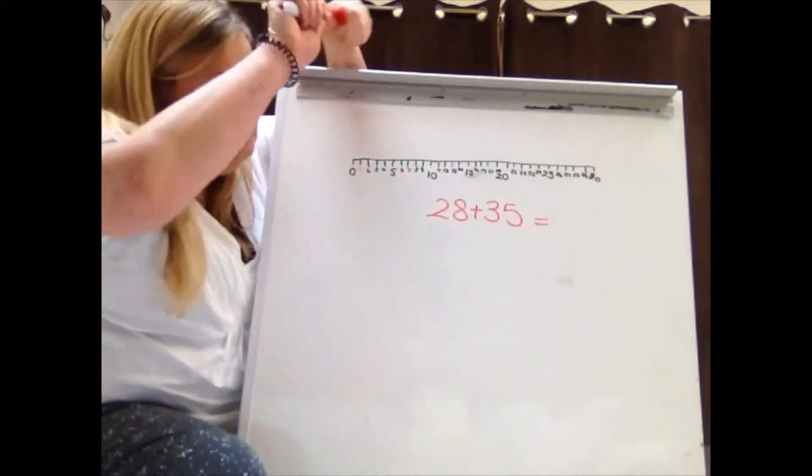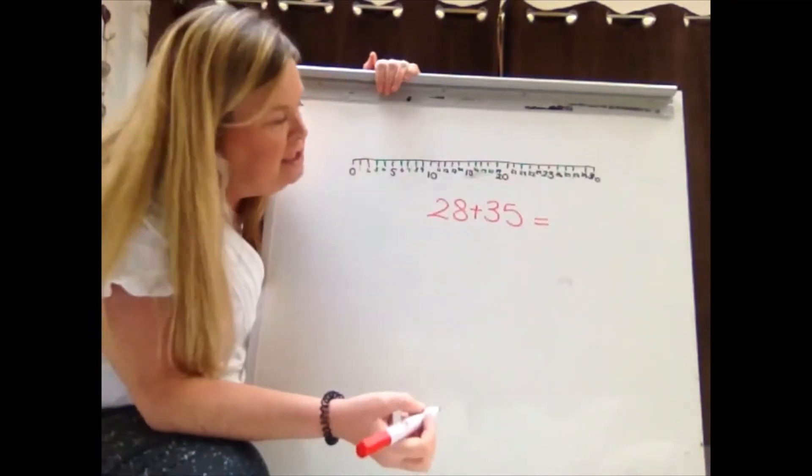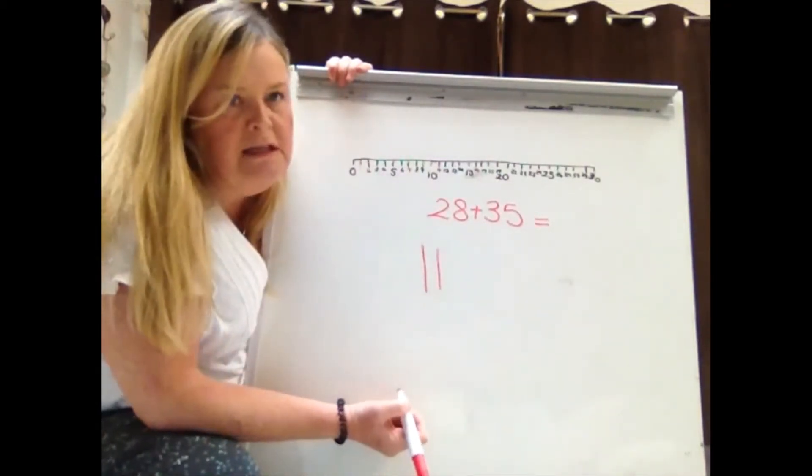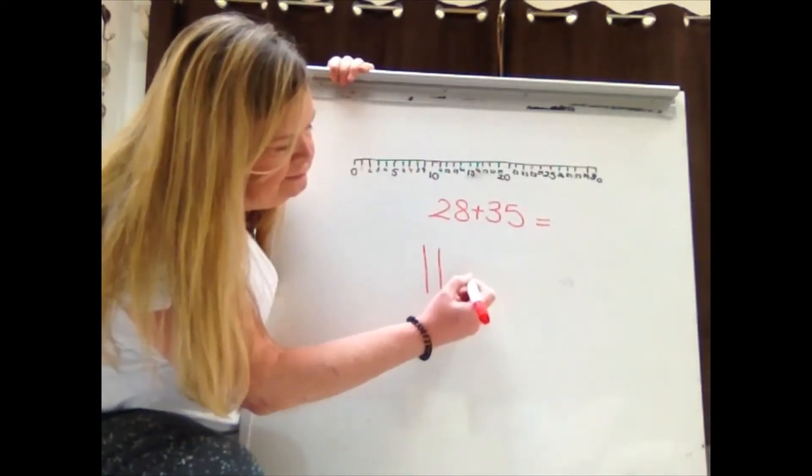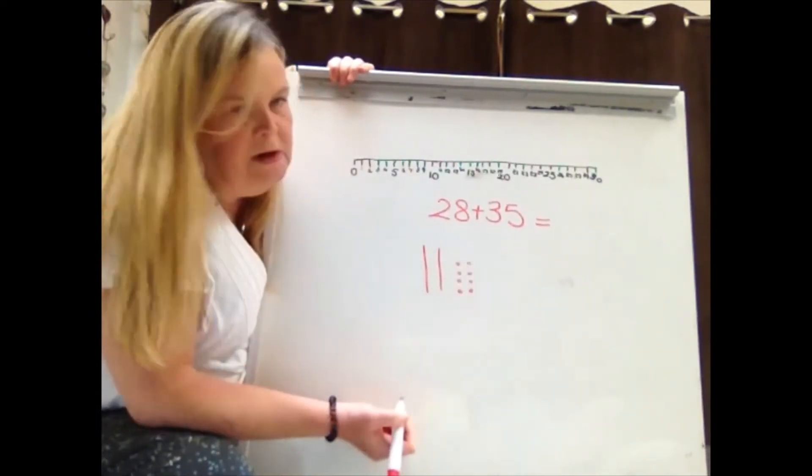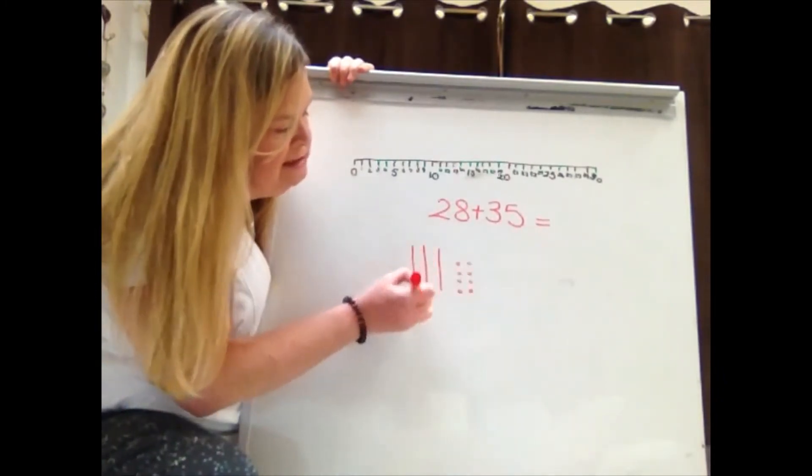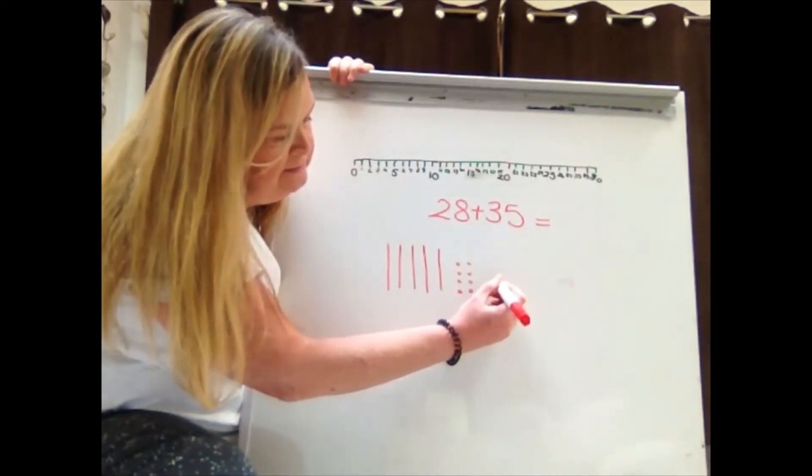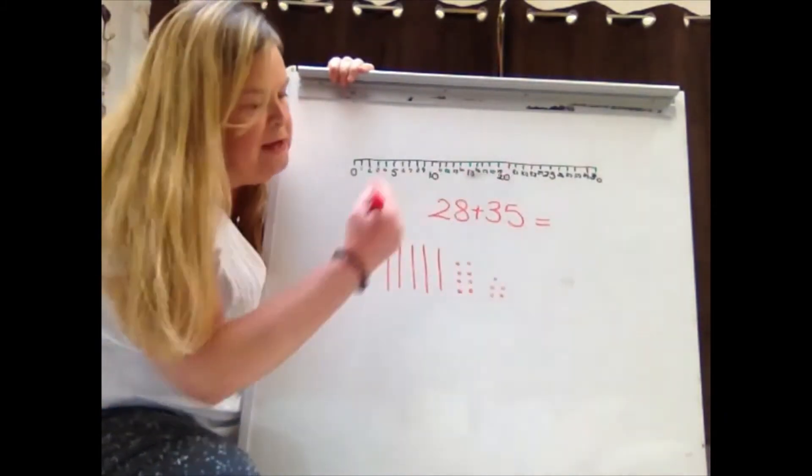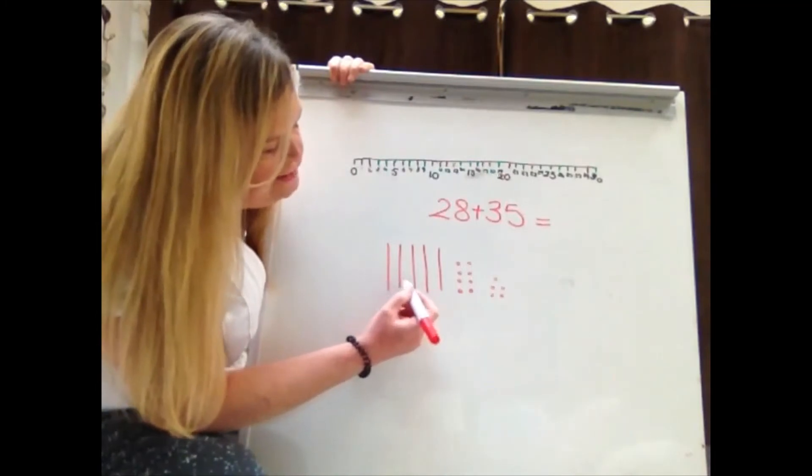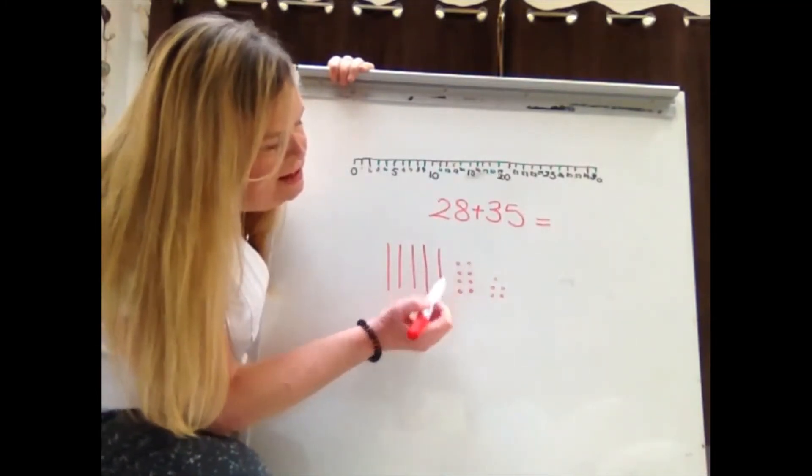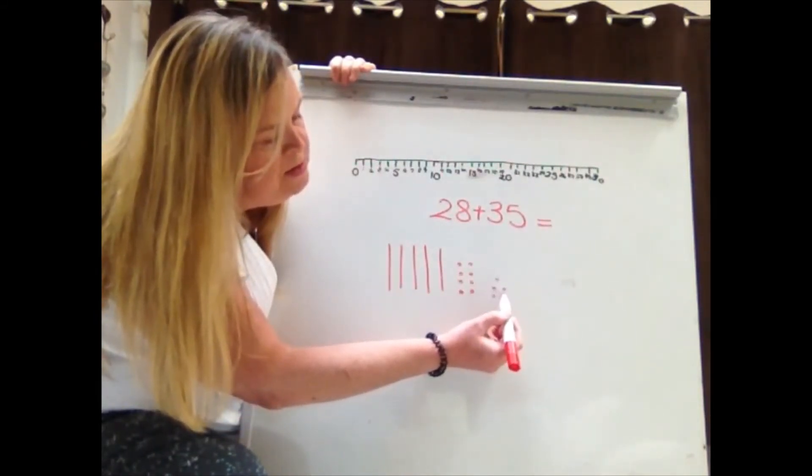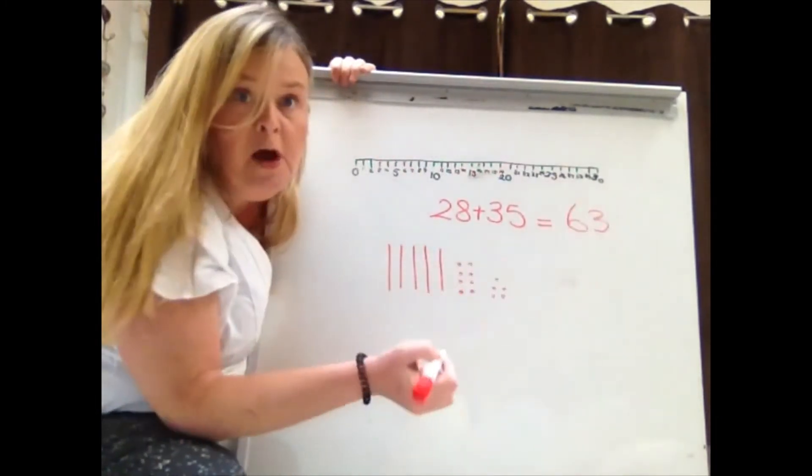So I've written a number sentence here: 28 plus 35. Then we're going to draw the correct number of tens and ones. So I've got two tens, eight ones. Now I'm going to add three more tens and five more ones. And then we'll count them all together to work out the answer. We've got 10, 20, 30, 40, 50. I know that's eight, so 58, 59, 60, and three more here. The answer's 63.